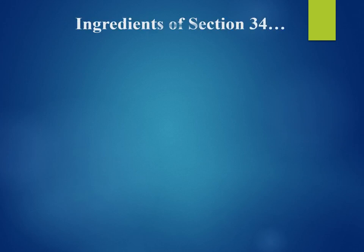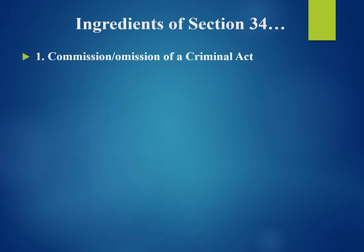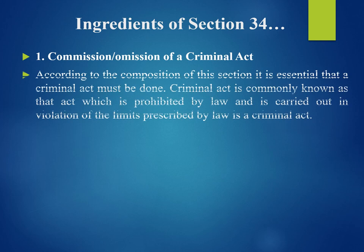Let's have a look at the ingredients of Section 34. The first one is commission or omission of a criminal act. According to the composition of this section, it is essential that a criminal act must be done. A criminal act is commonly known as that act which is prohibited by law and is carried out in violation of the limits prescribed by law.